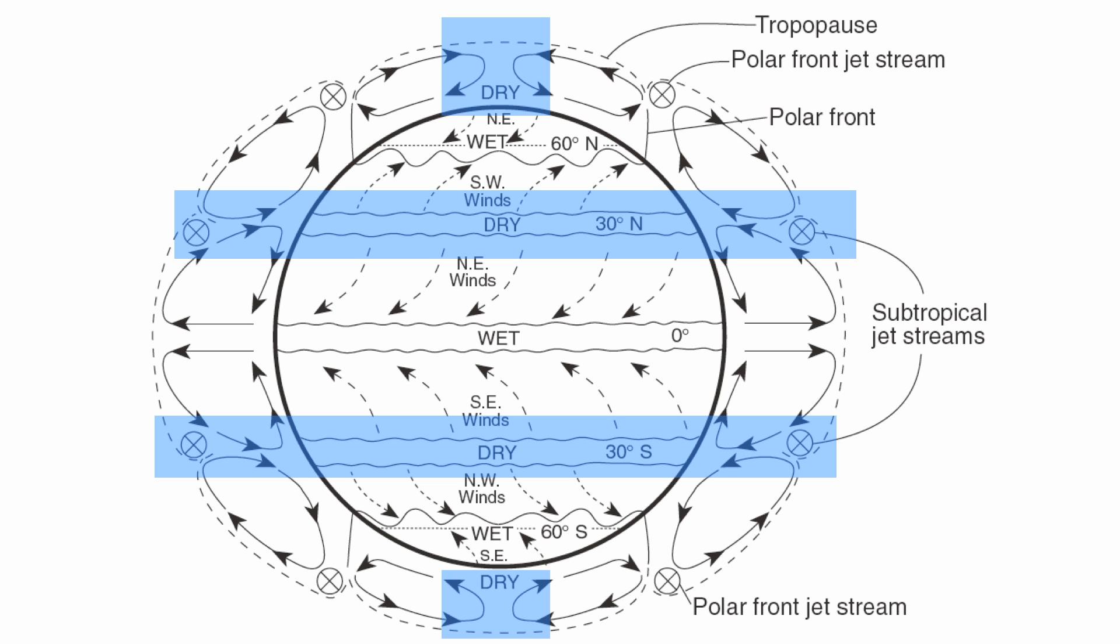Anywhere you have dry air that's sinking, high pressure that's sinking, you tend to have deserts. Even though the North Pole and South Pole have a lot of ice and snow, they're considered polar deserts. At 30 North and 30 South, that's where the majority of our deserts are found.